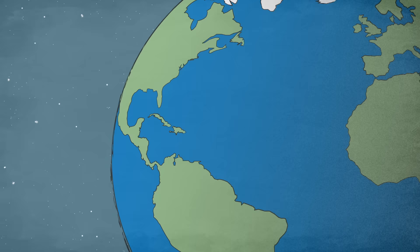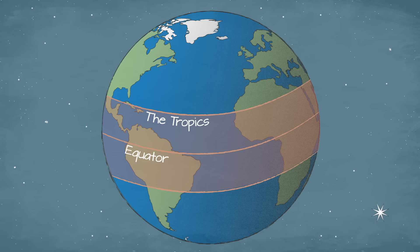Hurricanes are very large and intense storms. But where do these giant storms come from? A hurricane starts with the warm water found near the equator.